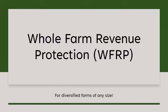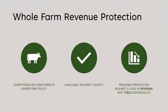Next is whole farm revenue protection, which is the policy we've talked about most for horticulture growers. This is best for very diversified farms, and a lot of our horticultural growers are diversified. Whole farm revenue protection covers everything on your farm under one policy — animals, vegetables, fruit, even value-added products. Unlike MPCI, this is available in every county.